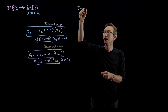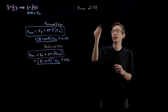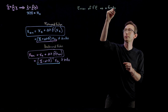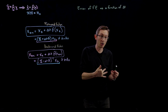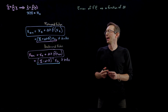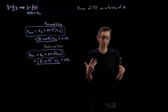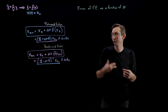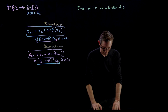We want to understand the error of the forward Euler scheme specifically as a function of delta t. We know that if we make delta t smaller, our error should go down, but how much faster does that error go down? I'm going to derive most of this for a scalar differential equation — x dot equals f of x, where x is a scalar — but everything generalizes to a full system of differential equations.